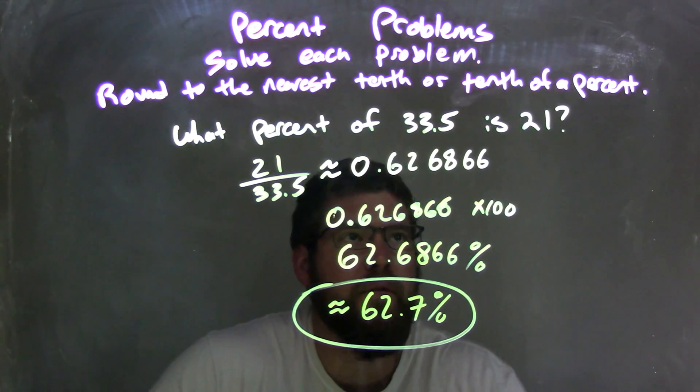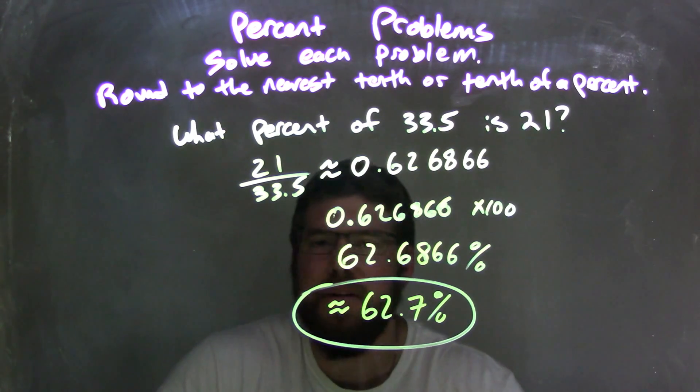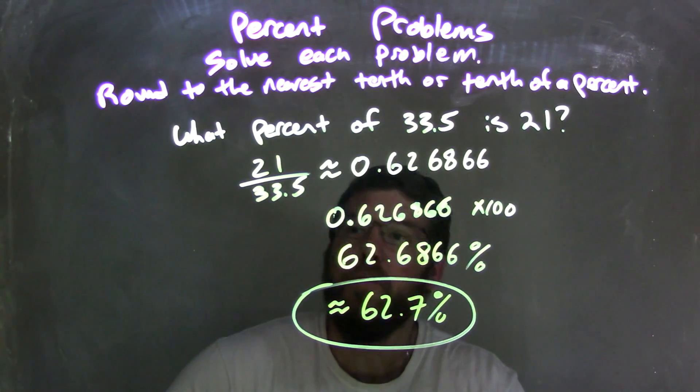So what percent of 33.5 is 21? It's 62.7%. So let's recap.